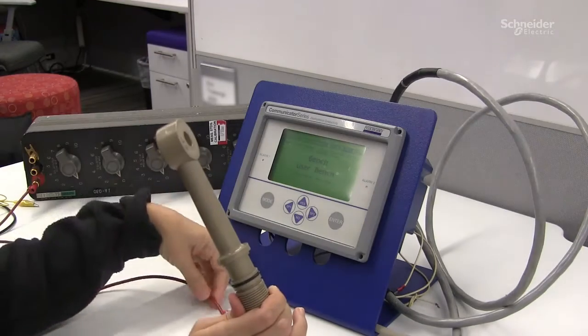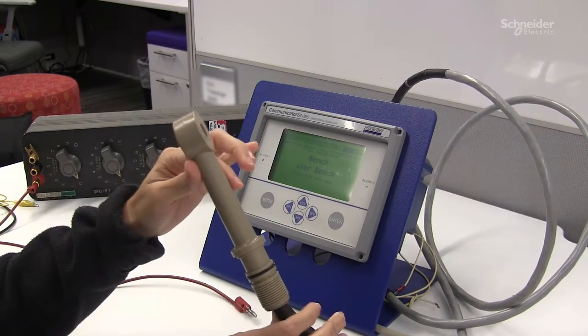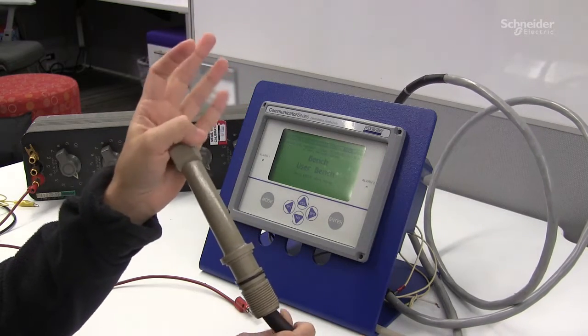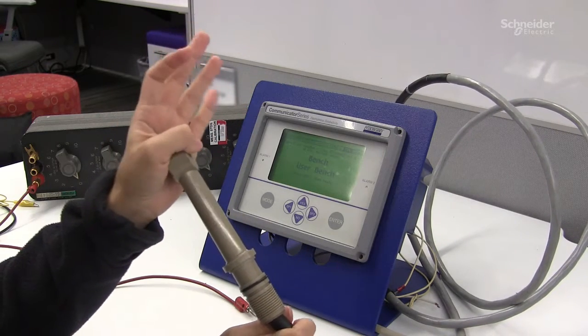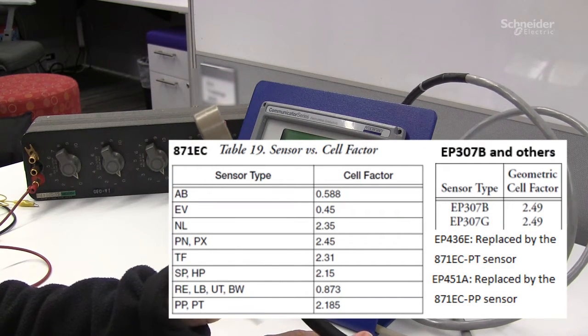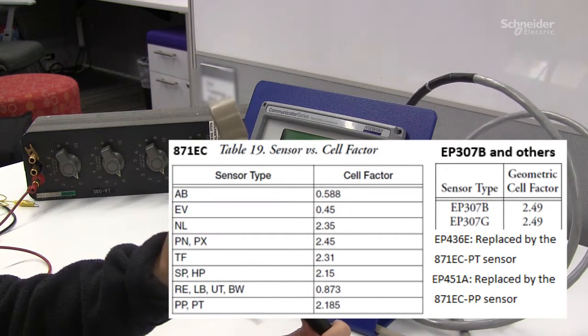To know the specific cell factor for your sensor type, consult the MI pages 49 and 50 and they also explain there how to use the formula. So my cell factor because I have an SP is 2.15.